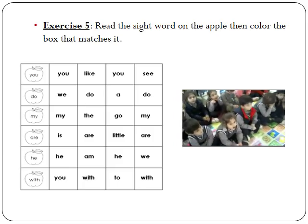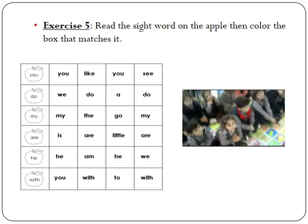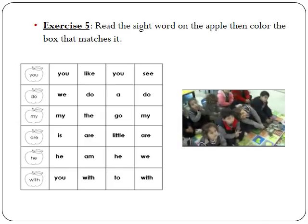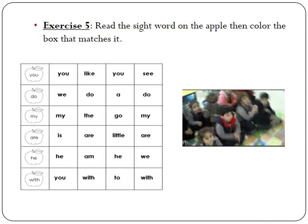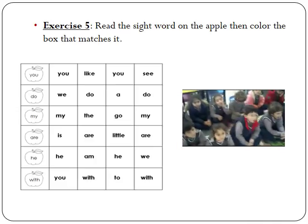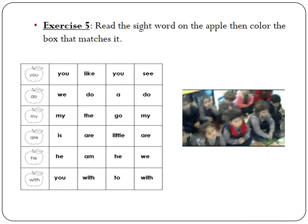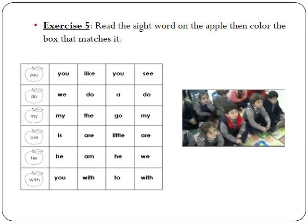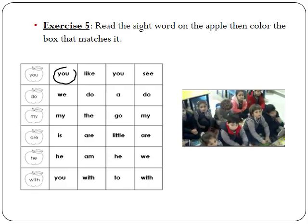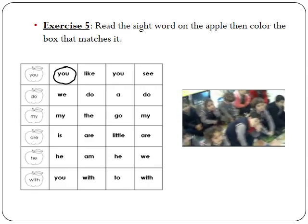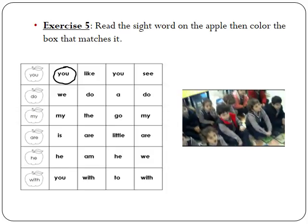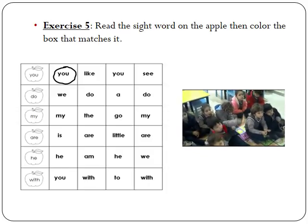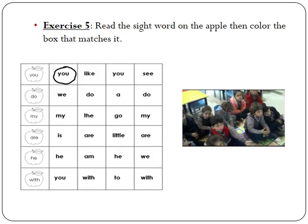Let's see now what exercise five asks us to do. We have to read the sight words on the apple and look at the boxes. We have to color the boxes that have a sight word similar to the one on the apple. What's the first sight word? You. Let us see, is the first one you? Yes. So I circle it. When you go home you color the box. But now I'm going to circle them. What's this word? Like. Should I circle it? No. What about this one? You. So I should circle it.